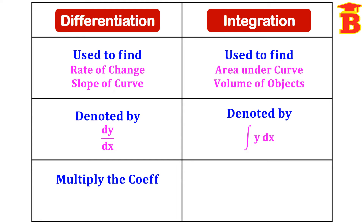In differentiation, we have to multiply the coefficient. For example, if we differentiate sin(ax), the formula d/dx of sin(ax) — here the coefficient is a. Since the differentiation of sin(x) is cos(x), the differentiation of sin(ax) is cos(ax) multiplied by a. We have to multiply this coefficient.